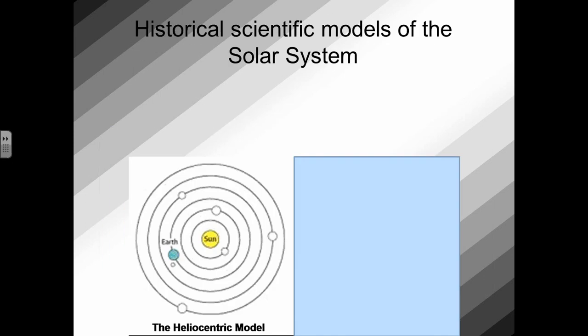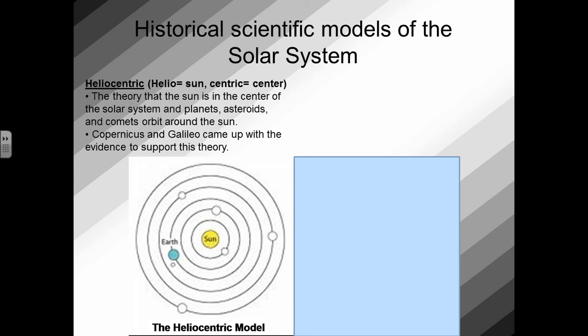When we're talking about the solar system, there's basically some historical scientific models of our solar system. There's what we call the heliocentric model and the geocentric model. In the picture below, you see the heliocentric model, which has the sun in the center of the solar system, and all of the planets are orbiting around. Well, the heliocentric model simply means sun-centered. Helio means sun, centric means center.